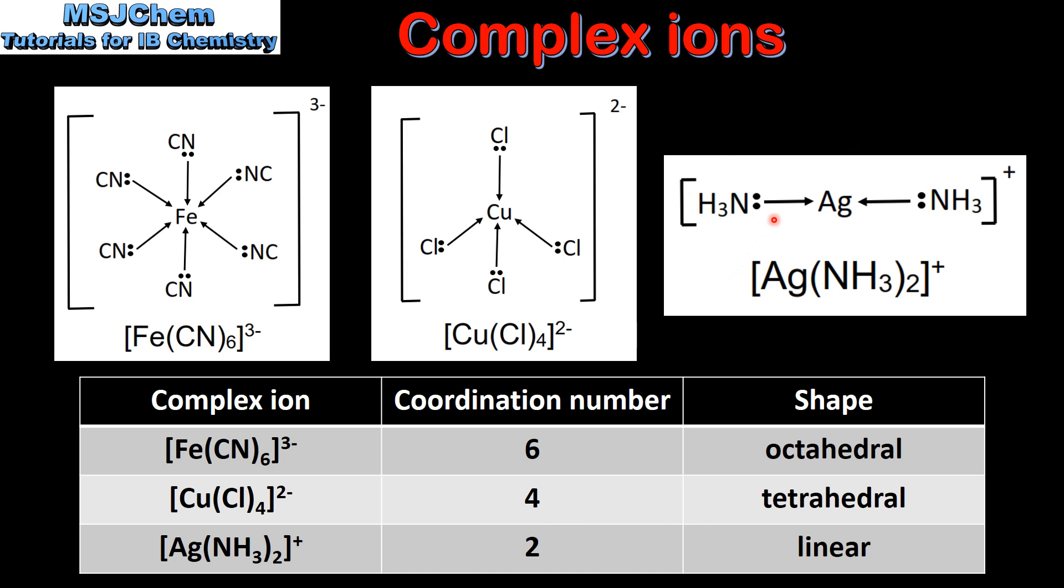Our last example has 2 ligands bonded to the central metal ion, therefore the coordination number is 2 and the shape is linear.